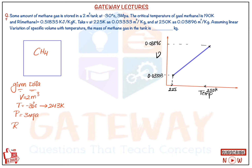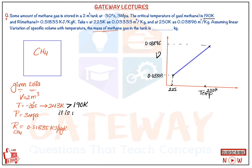The value of R for methane is 0.51835. Importantly, the critical temperature of methane is given — we need to check whether the gas is in superheated state. Since 243 kelvin is greater than the critical temperature of 190 kelvin, the gas is in a superheated state, and we can directly apply ideal gas equations.